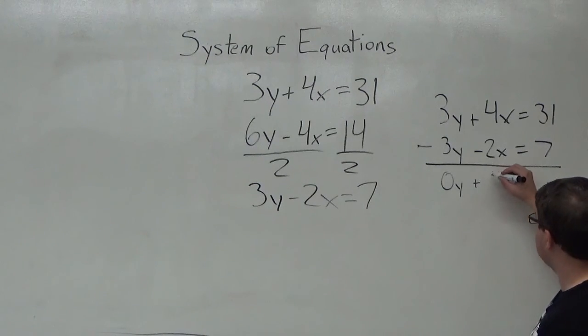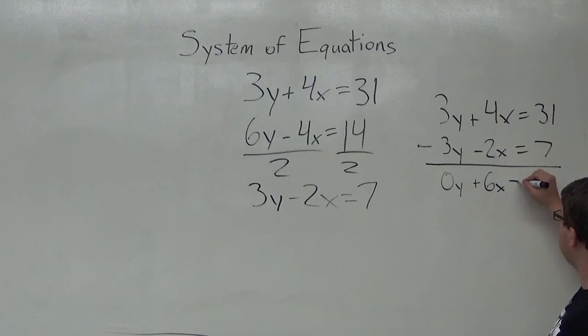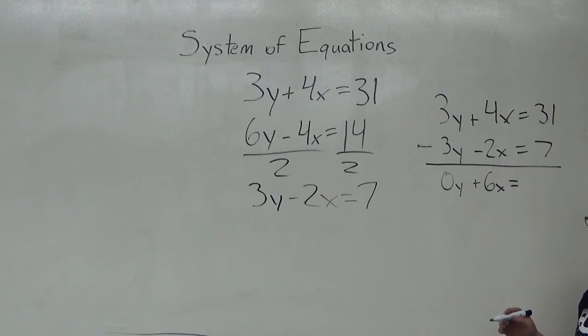equals 31 minus 7, which is equal to 24.